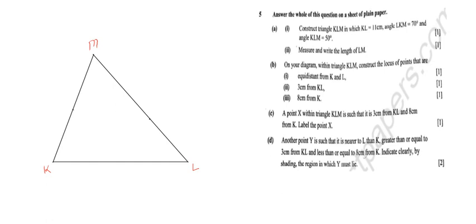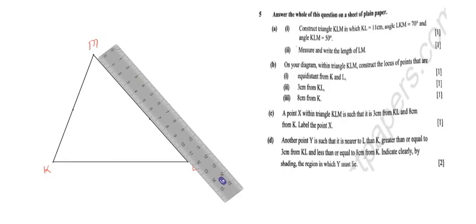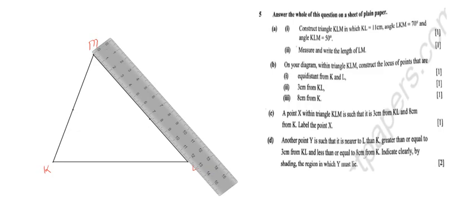What follows is measuring and writing the length LM. I get my ruler and rotate it to go from M to L, starting at zero. According to what I'm getting, this is appearing to be something like 12.2 centimeters. You might get something slightly different depending on your instruments. If your pencil is sharper than mine, you might get 12.1 or 12.3 — at least we have that kind of precision.